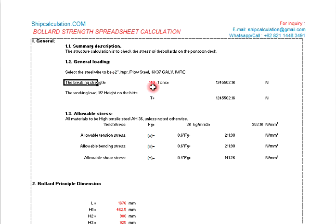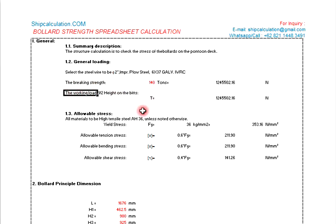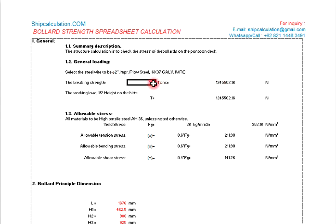Normally this breaking strength is times 4 from the safety working load. And then the working load is half of that. This is the breaking strength compared to Newton — this one uses an automatic formula, so you don't need to change it.